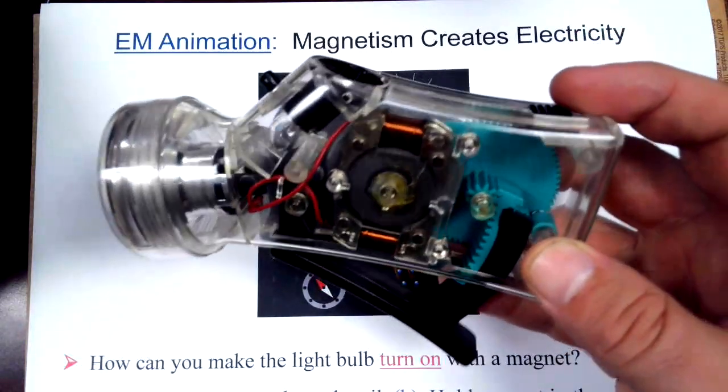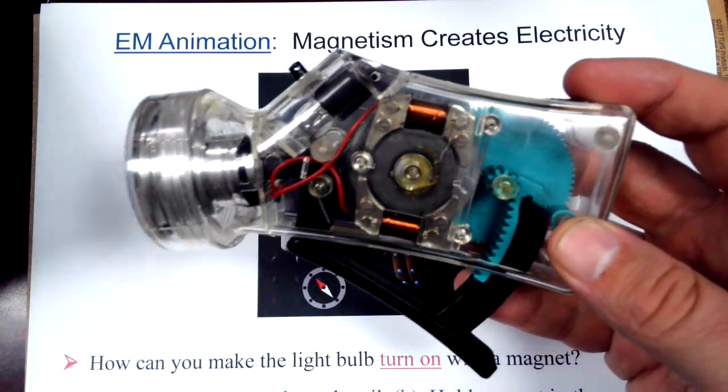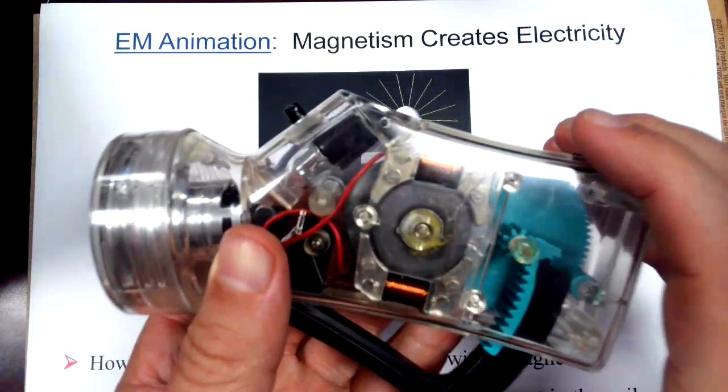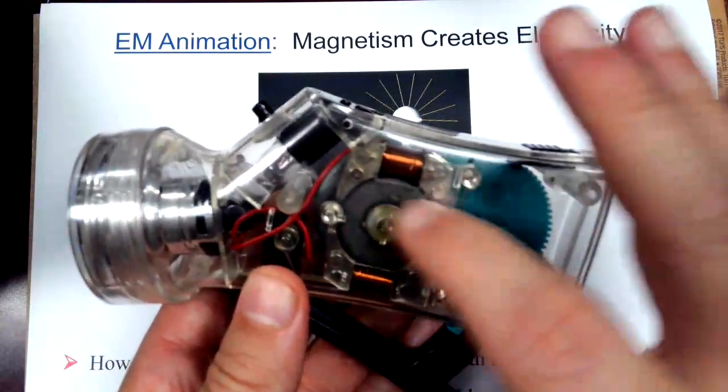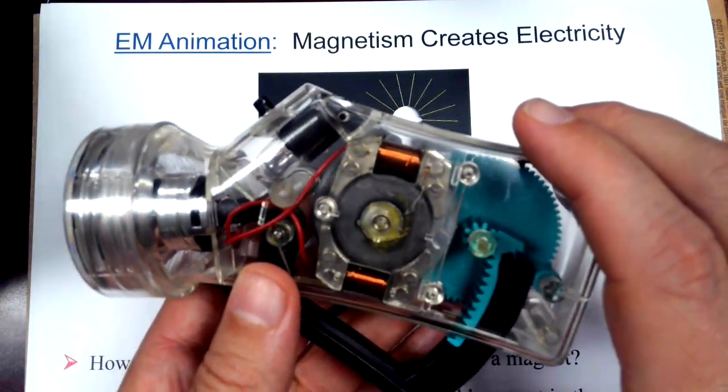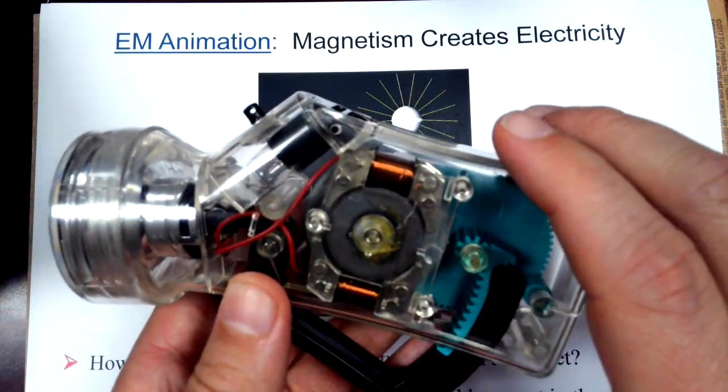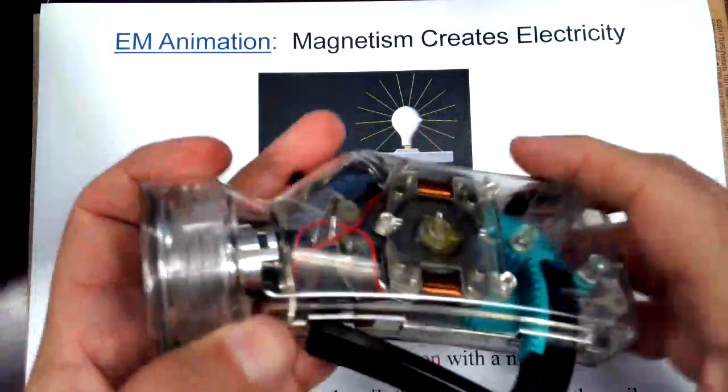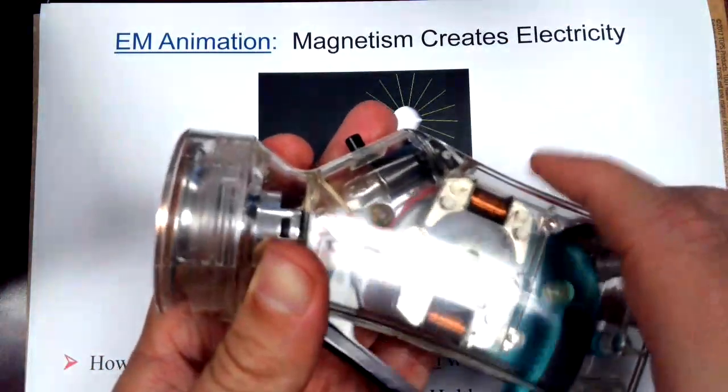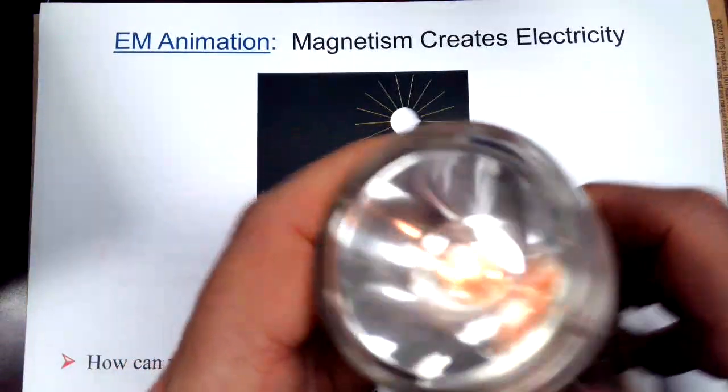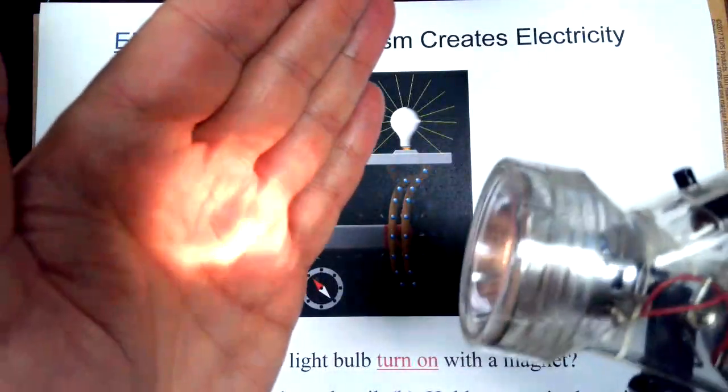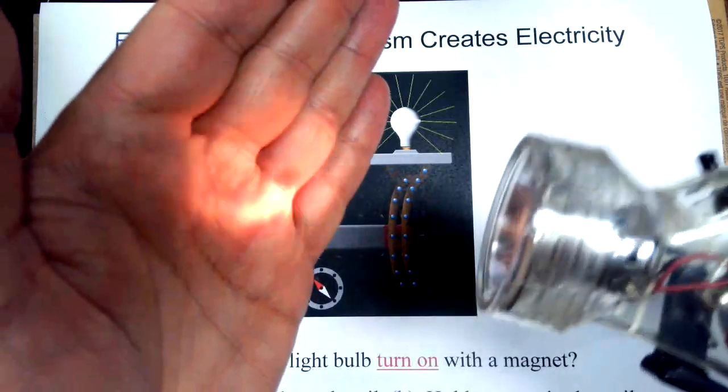What happens is if I spin this, I can cause the magnet to spin, and that will induce a current through these coils. So if I spin this, you can see I am generating some light.